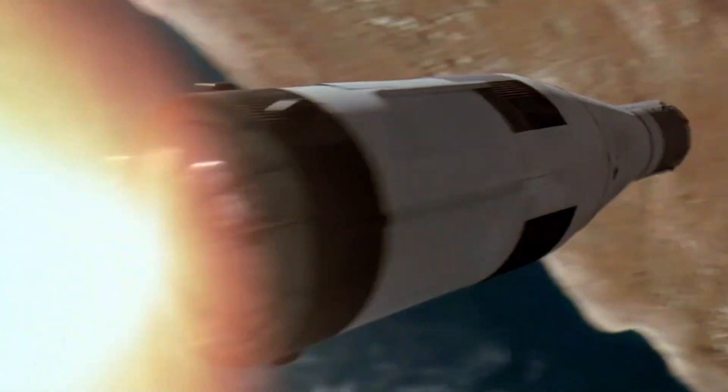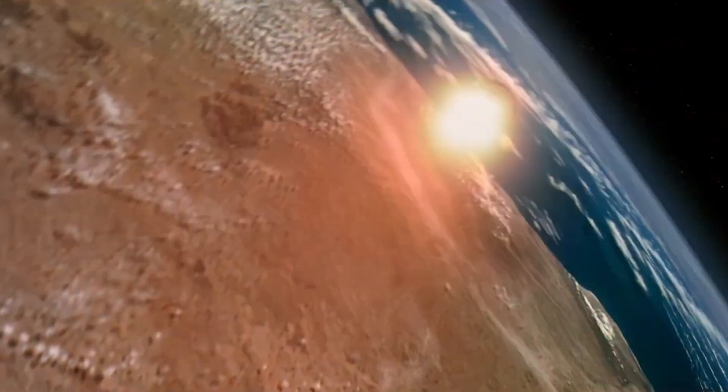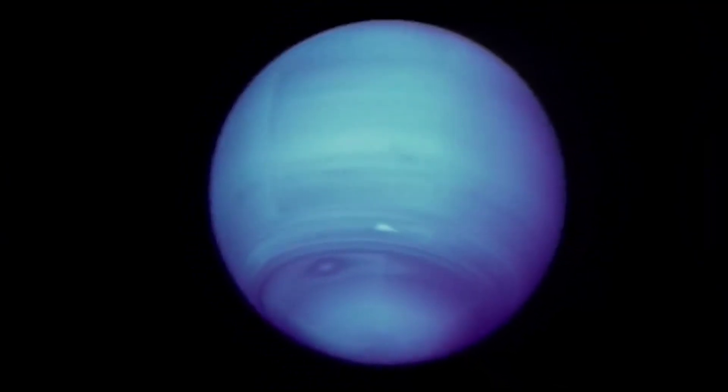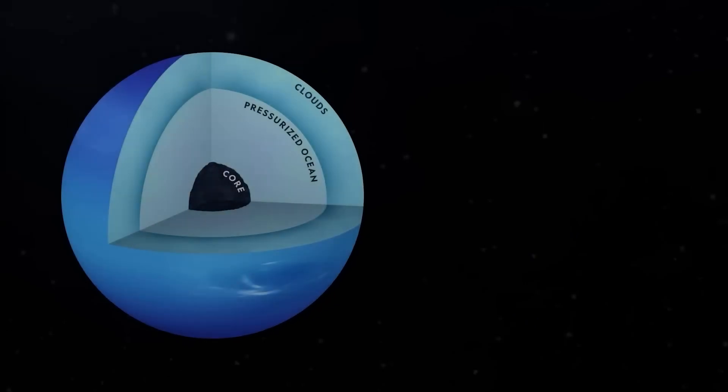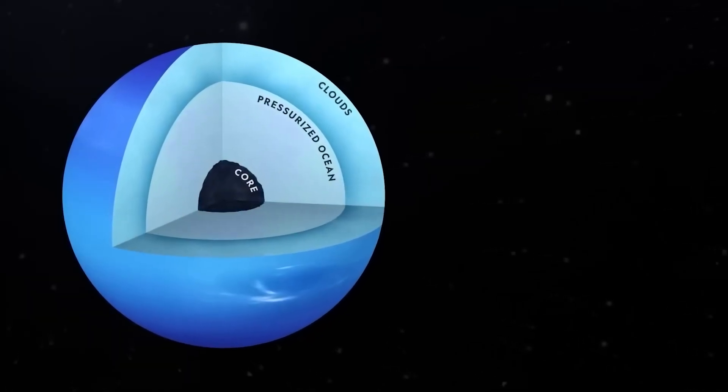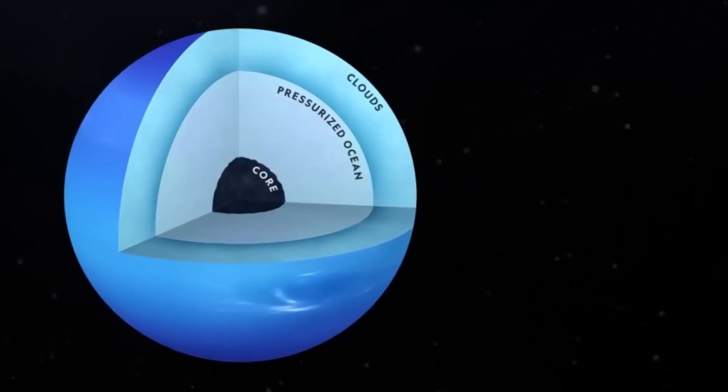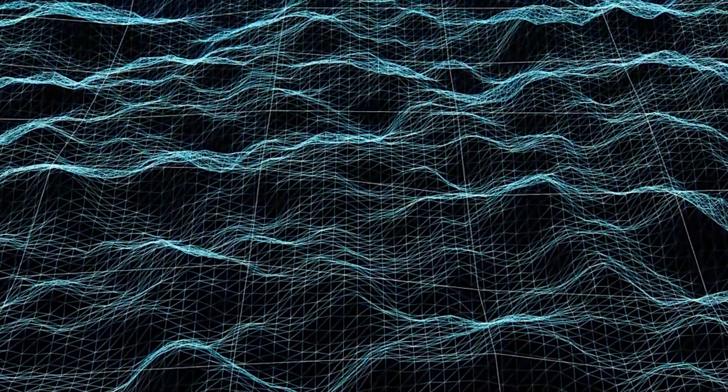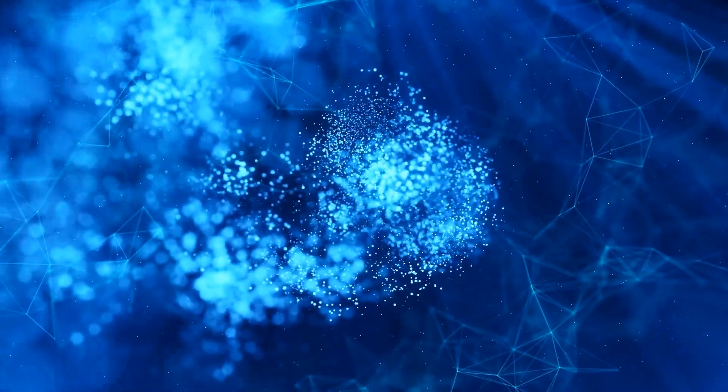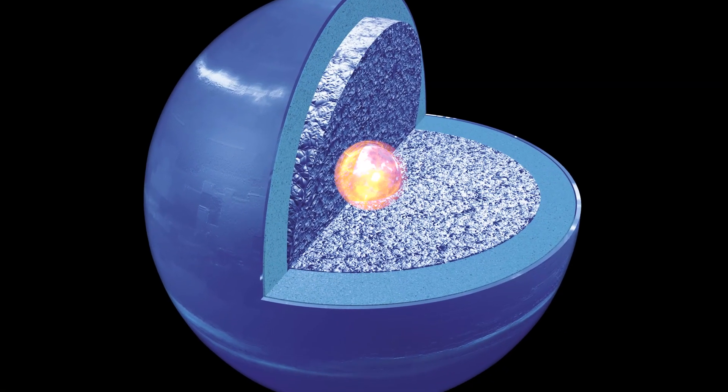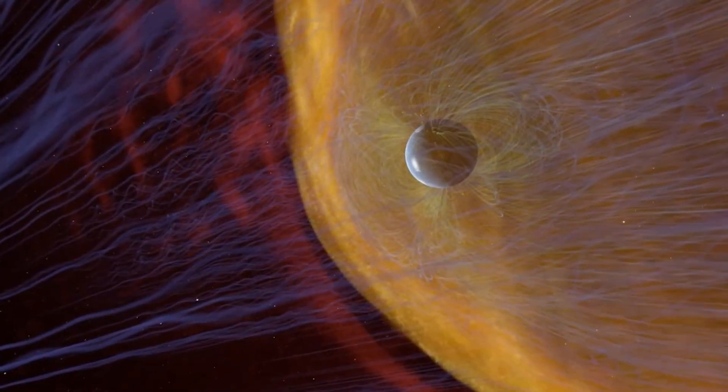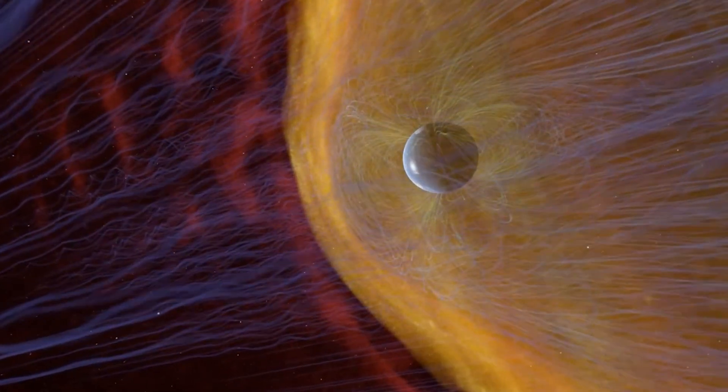There is a slim possibility that life might exist inside Neptune. Scientists speculate that a layer of liquid water could be sandwiched between the icy upper mantle and the rocky lower core under high pressure and temperature. This liquid water layer could potentially provide a medium for chemical reactions and act as a solvent for organic molecules. The heat from the core could also serve as an energy source for any potential life forms and the planet's magnetic field might offer protection from cosmic rays.